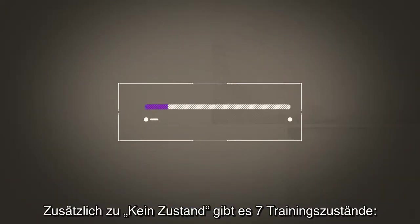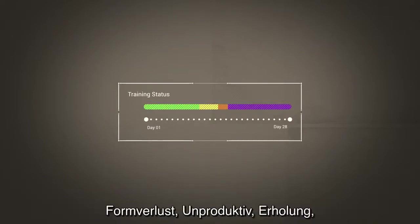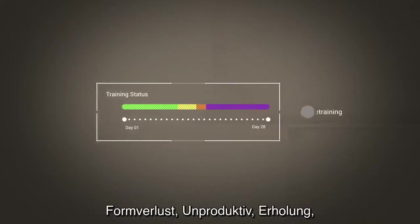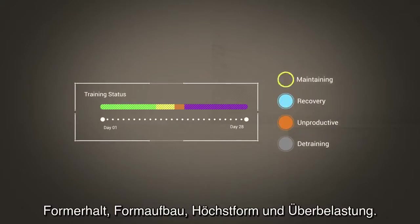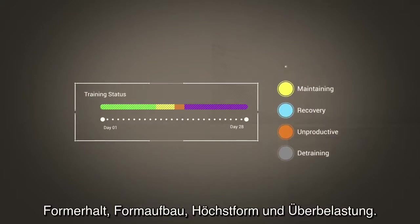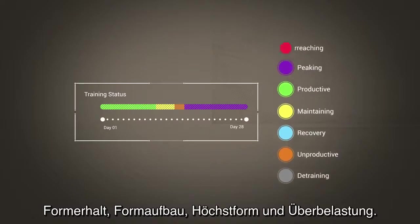There are seven training status levels in addition to no status. These are: detraining, unproductive, recovery, maintaining, productive, peaking, and overreaching.